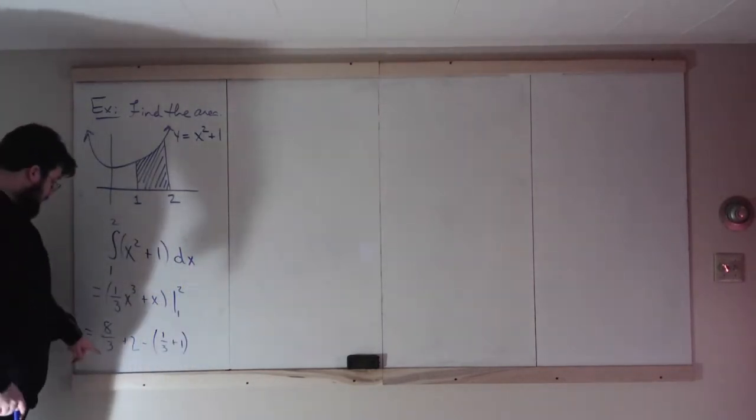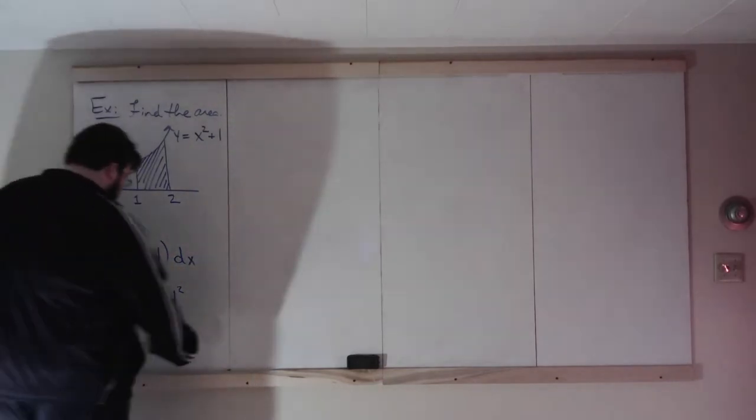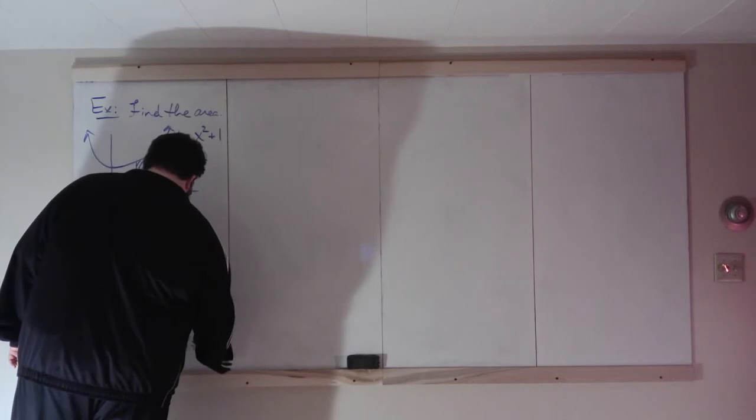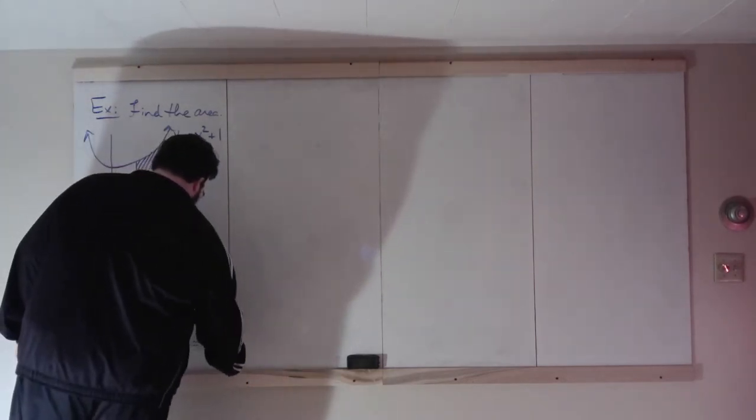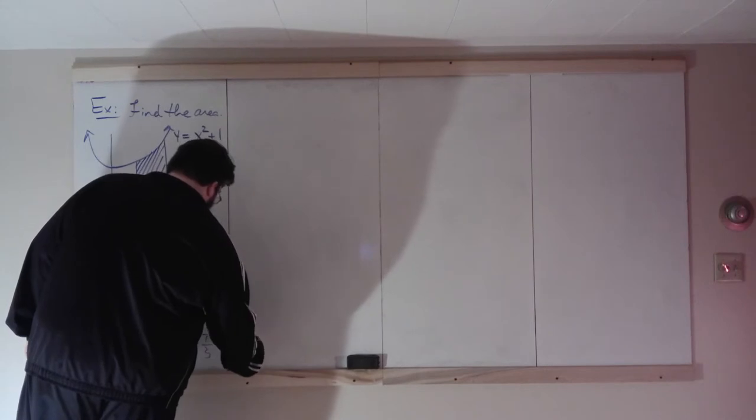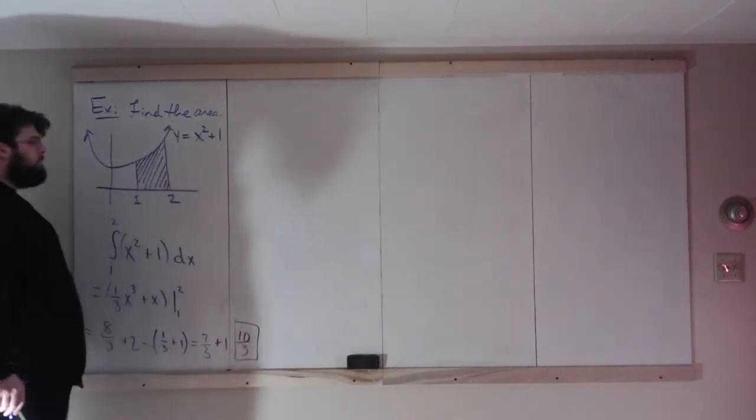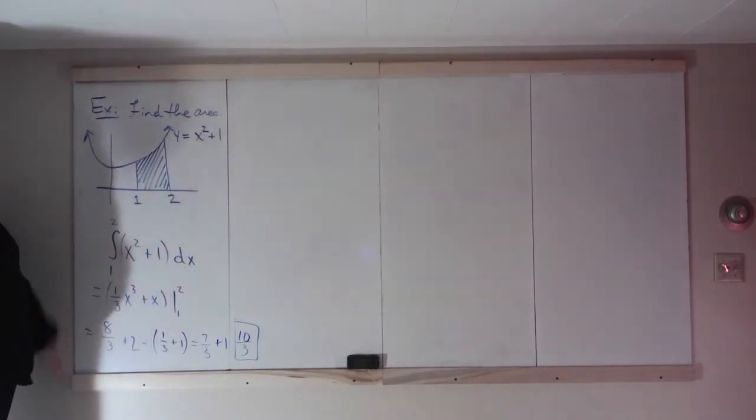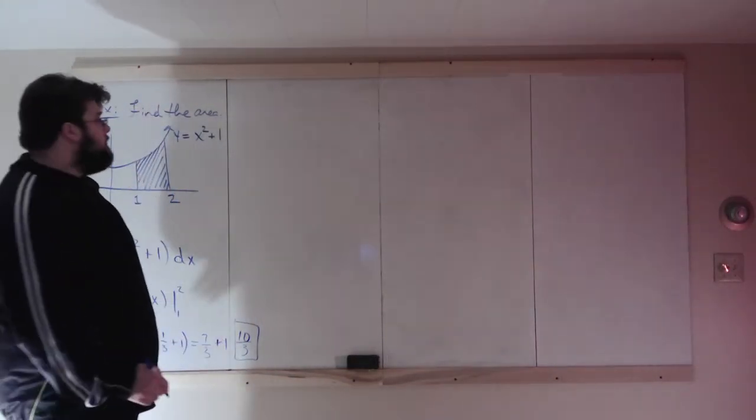What do we get there? 8 thirds minus 1 third is 7 thirds, 2 minus 1 is 1, so we get 7 thirds plus 1, which is 10 thirds. So we can use an integral to find the area, but we can actually extend this to multiple functions.